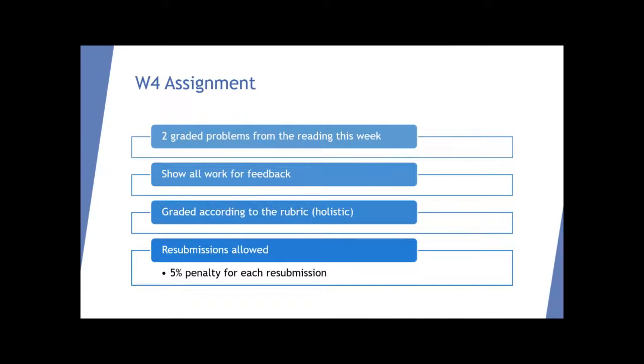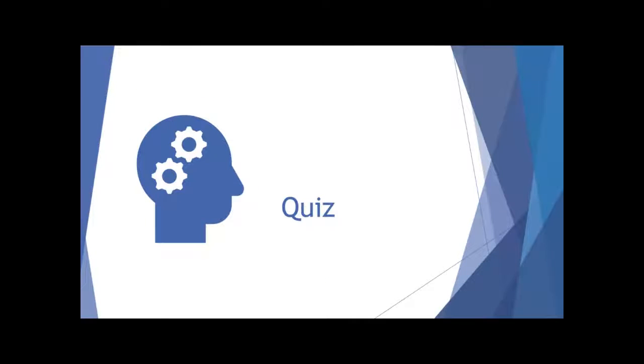For your actual assignment, you have two graded problems. That's what you're going to have for every assignment. Make sure you're showing all work so that if you do get a low grade, you can resubmit your work. There is a penalty, but that's better than having a low grade. If you have any questions on your feedback for the assignments after reviewing them, let me know and I can read them and see if I need to contact the grader for more details.